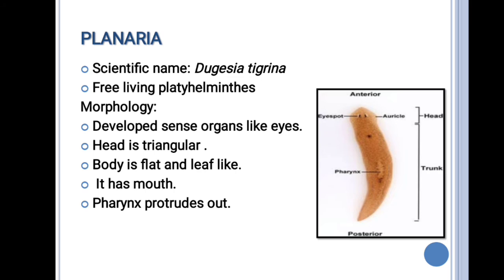The next example is Planaria. Its scientific name is Dugesia tigrina. This is a free-living Platyhelminthes. It is a bit different in morphology — it develops sense organs like eyes in the anterior part. The head is triangular in shape.